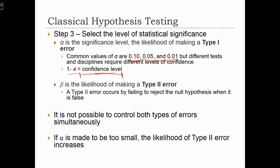Now, recall that beta is the likelihood of making a type 2 error. A type 2 error occurs when we fail to reject the null hypothesis when, in fact, we should reject the null hypothesis. It's not possible to control for both of these errors simultaneously. So typically what we like to do is control for type 1 error by making alpha small.